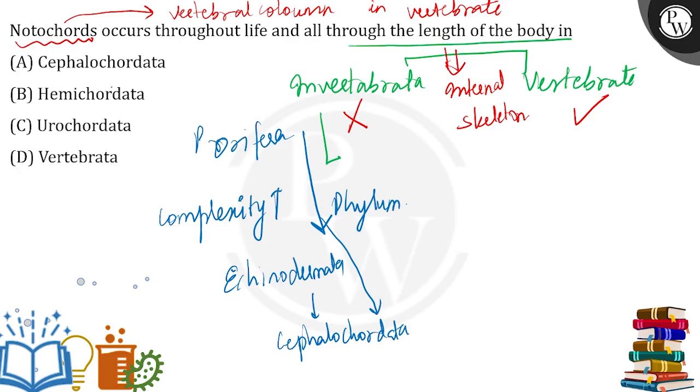The notochord, if we talk about its structure, is mesodermally derived from the germ layer mesoderm. It is a solid rod of turgid cells present in the chordate.